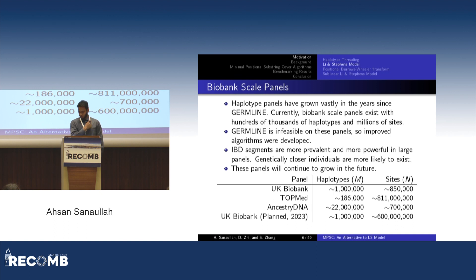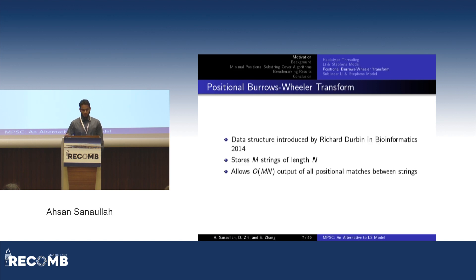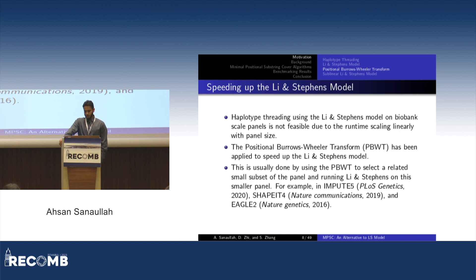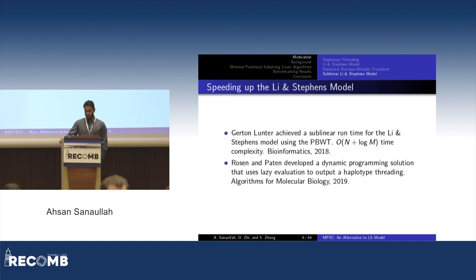Since the Li-Stevens model was introduced, the size of haplotype panels has become much larger. The Li-Stevens model has been made more efficient using the positional Burrows-Wheeler transform, which outputs all matches in a panel in time linear to the size of the panel. It's usually sped up by using the PBWT to select a small segment of the panel related to the query haplotype, then running Li-Stevens on this smaller sub-segment. More recently, Gern Lunter showed haplotype threading using the Li-Stevens model sub-linear to the panel size, and Rosen and Patton also achieve sub-linear with a lazy algorithm.